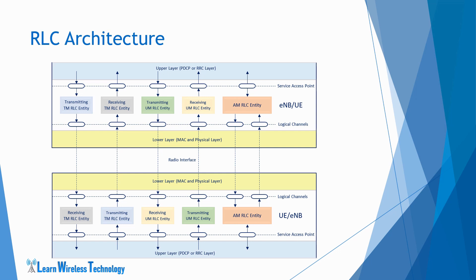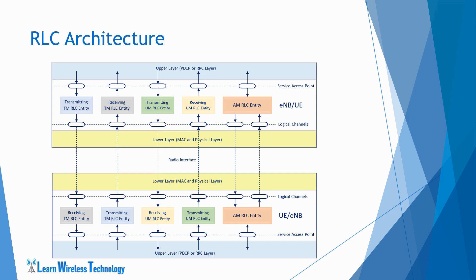In the case of the acknowledged mode RLC entity, it consists of a separate transmitting and receiving side, unlike the other two modes where the entity can be configured as either transmitting or receiving at a time.